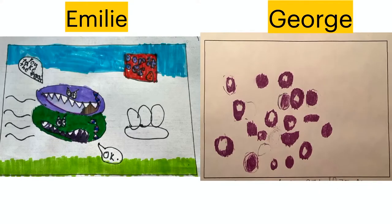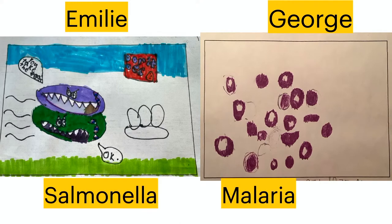Up next we have Emily and George. I love this artwork. I'm going to guess Noah's — I mean George's — is malaria, and for Emily's pathogen, it says 'you take the eggs,' so I'm guessing salmonella, because salmonella is often found in eggs. You got both of them right! Must mean I've got some good artwork. Great artwork there.